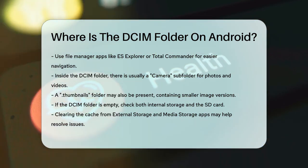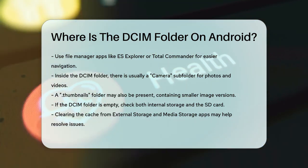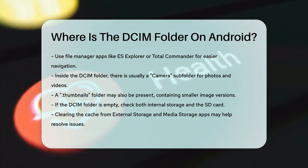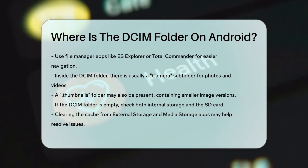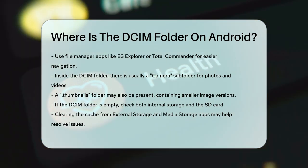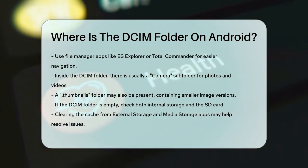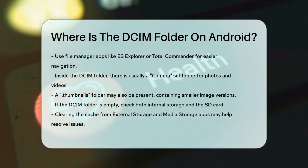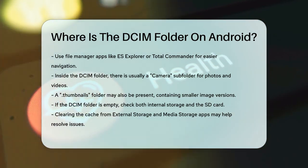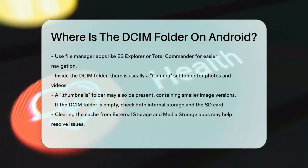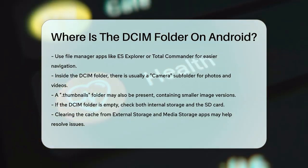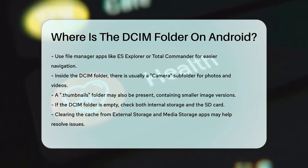In summary, the DCIM folder on Android is where all your camera photos and videos are stored. You can find it by connecting your phone to a computer, using a file manager app, or checking the internal storage and SD card directly.